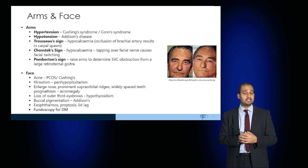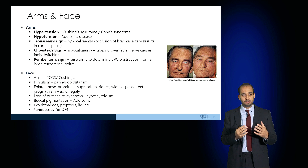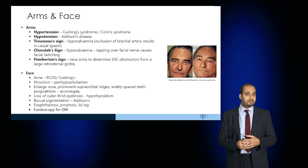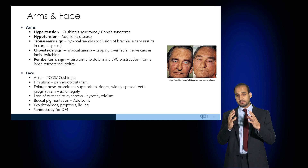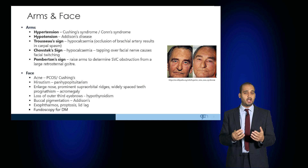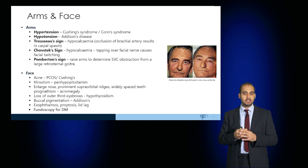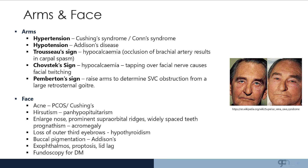Observe the face for any signs of acne. Excessive acne or hirsutism may be due to polycystic ovarian syndrome or Cushing's disease. Observe the features — an enlarged nose, prominent supraorbital ridges, widely spaced teeth, or prognathism which is protrusion of the lower jaw — may suggest acromegaly.